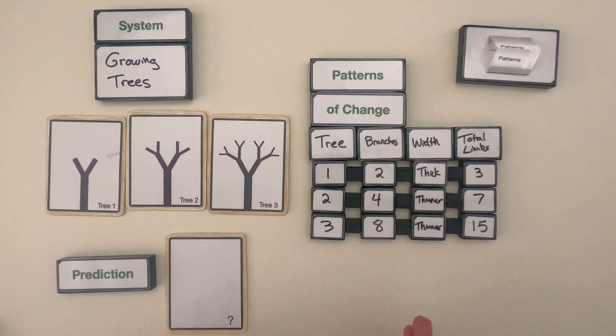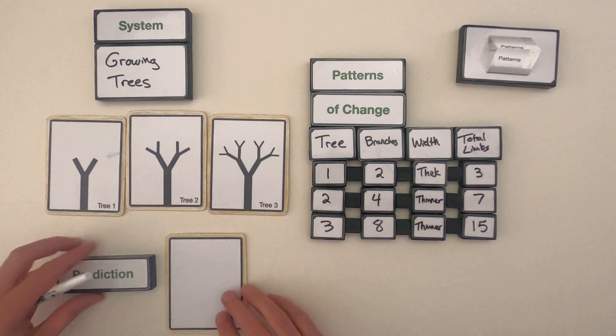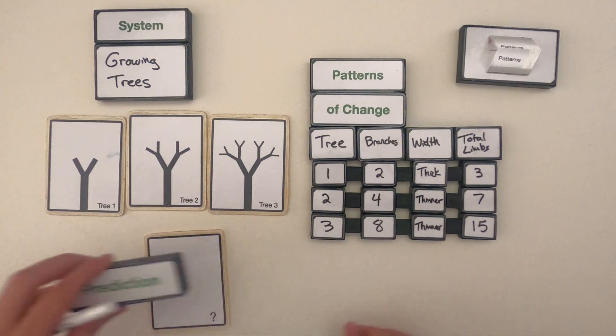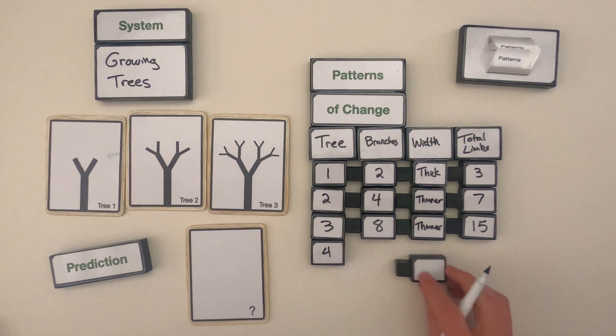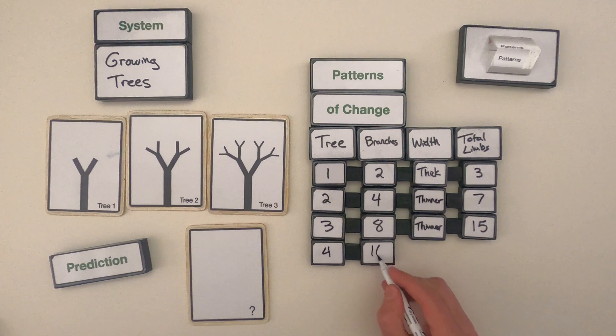So the next thing I'm going to do, instead of trying to draw the tree, I'm just going to look at all these patterns of change so I could make some predictions across the bottom. So the first prediction I would make is that this tree is going to be called tree four. As far as the number of branches go, since it's doubling each time, I think there's going to be 16.